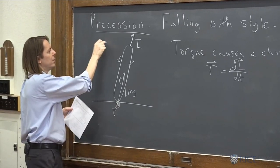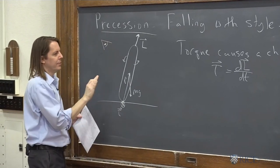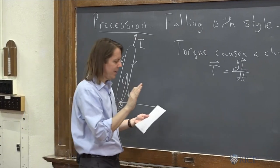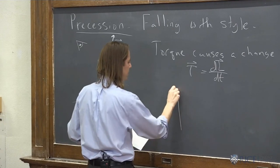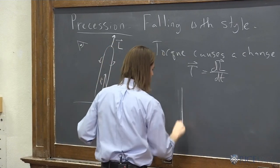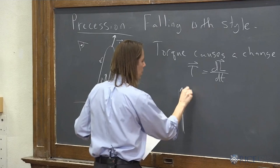Now let's look at the ring kind of from up here and think about its L vector. So now if we look at it from there, and we'll say it has some initial L like this, Li.